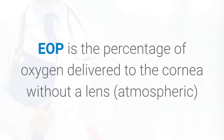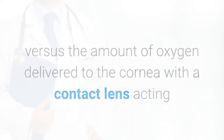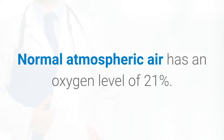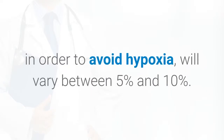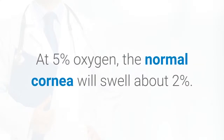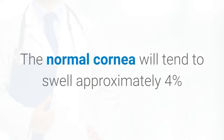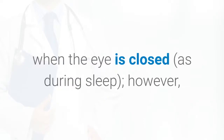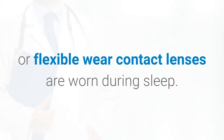EOP is the percentage of oxygen delivered to the cornea without a lens versus the amount of oxygen delivered to the cornea with a contact lens acting as a barrier. Normal atmospheric air has an oxygen level of 21 percent. The oxygen requirements of the cornea, in order to avoid hypoxia, will vary between 5 percent and 10 percent. At 5 percent oxygen, the normal cornea will swell about 2 percent; at 8 percent oxygen, the cornea will swell about 1 percent. The normal cornea will tend to swell approximately 4 percent when the eye is closed, as during sleep; however, this can be substantially higher if extended or flexible wear contact lenses are worn during sleep.